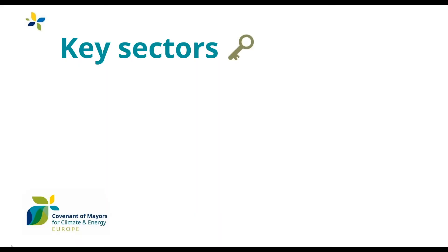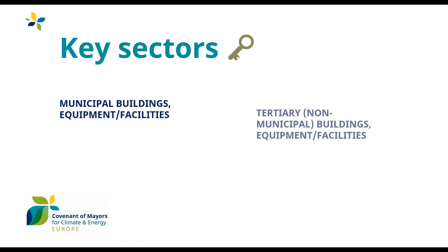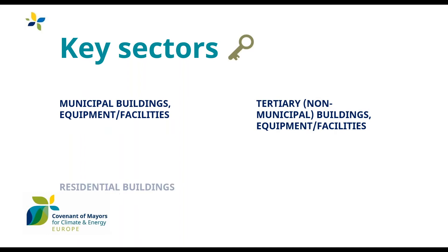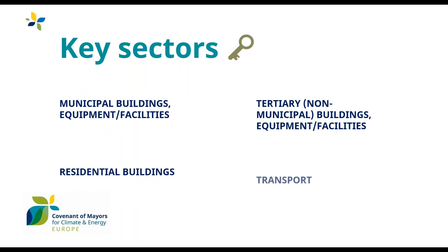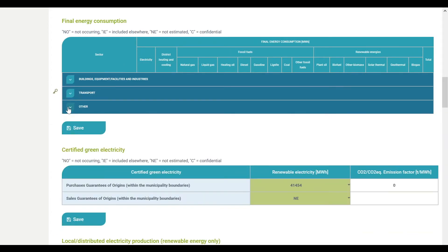The four covenant key sectors are: municipal buildings, equipment and facilities; tertiary non-municipal buildings, equipment and facilities; residential buildings; and transport. The table includes three macro sectors: buildings, equipment, facilities and industries; transport; and other. Each macro sector includes a set of sectors and sub-sectors.